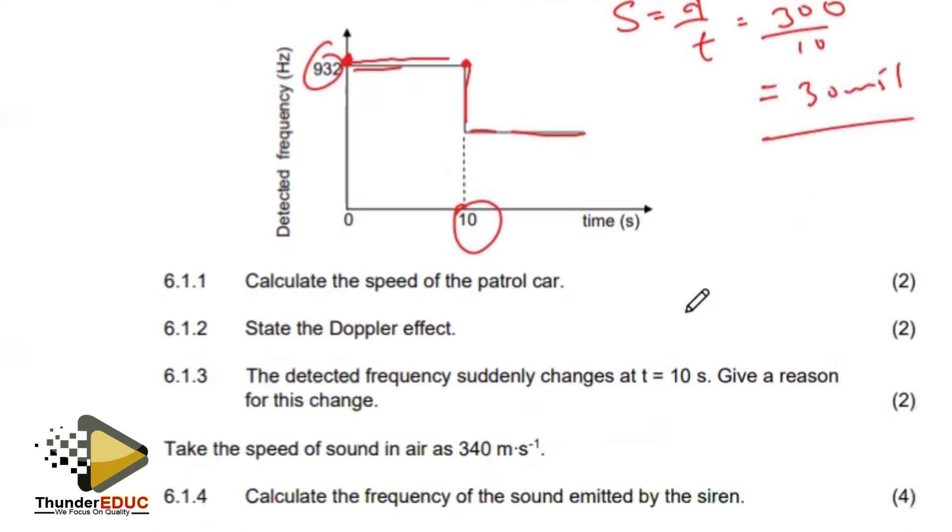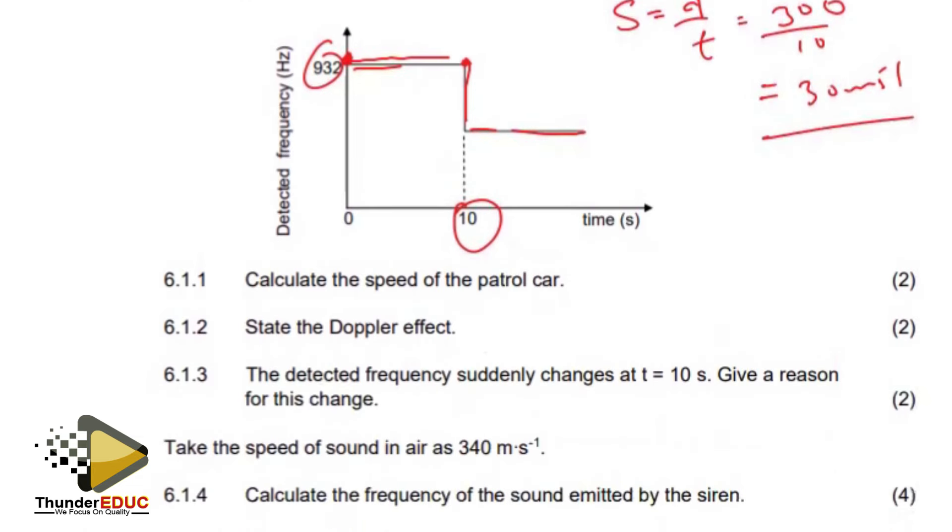State Doppler effect. Remember what we said, that the change in the frequency of a sound detected by the listener because the sound source and the listener have different velocities, that is relative to the medium or the sound or medium propagation of sound.